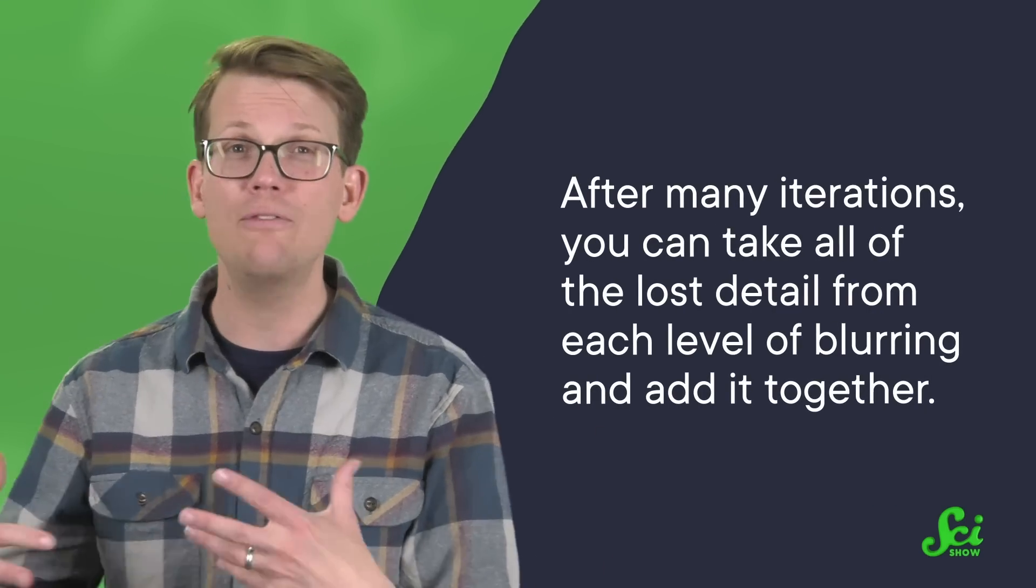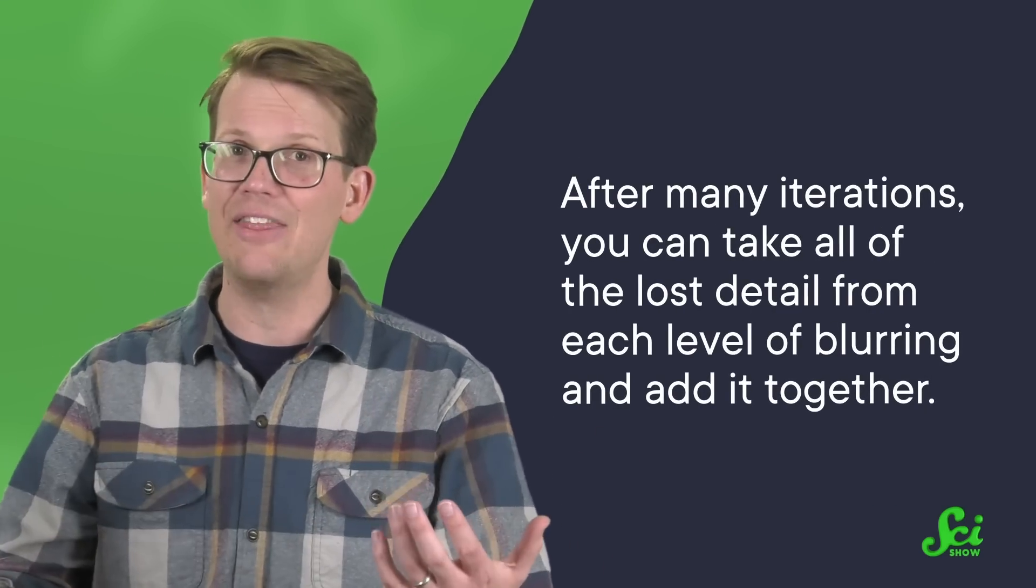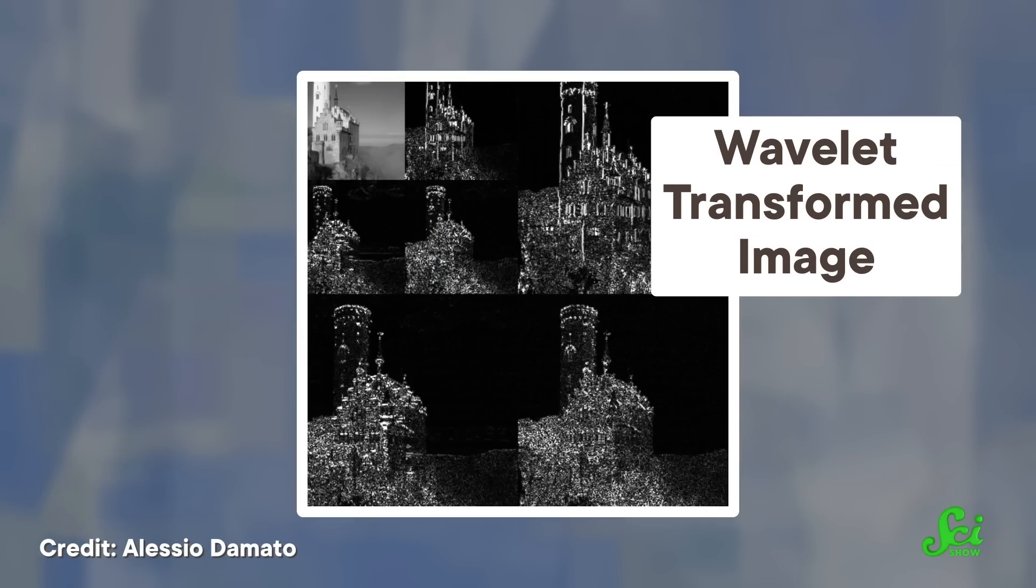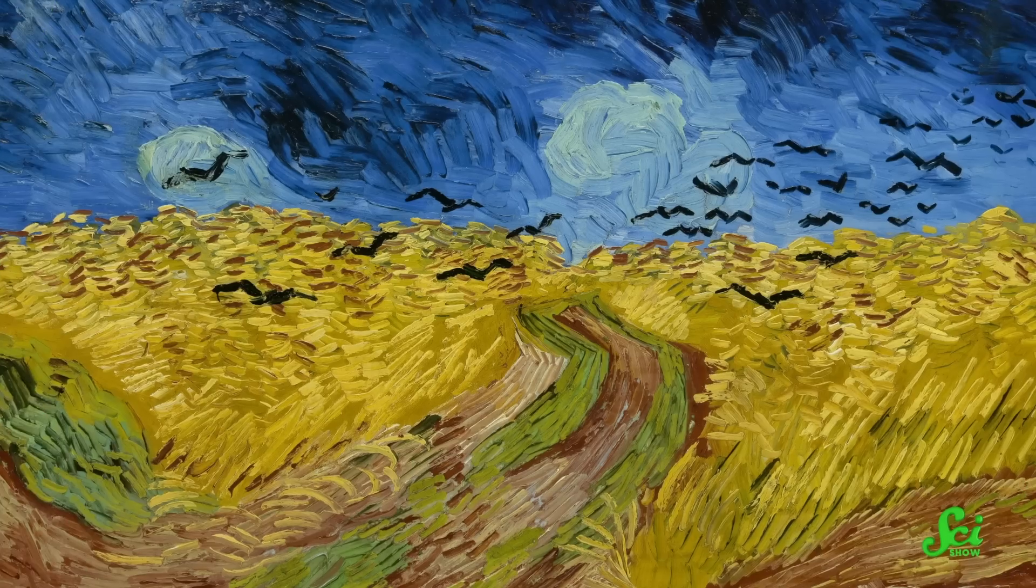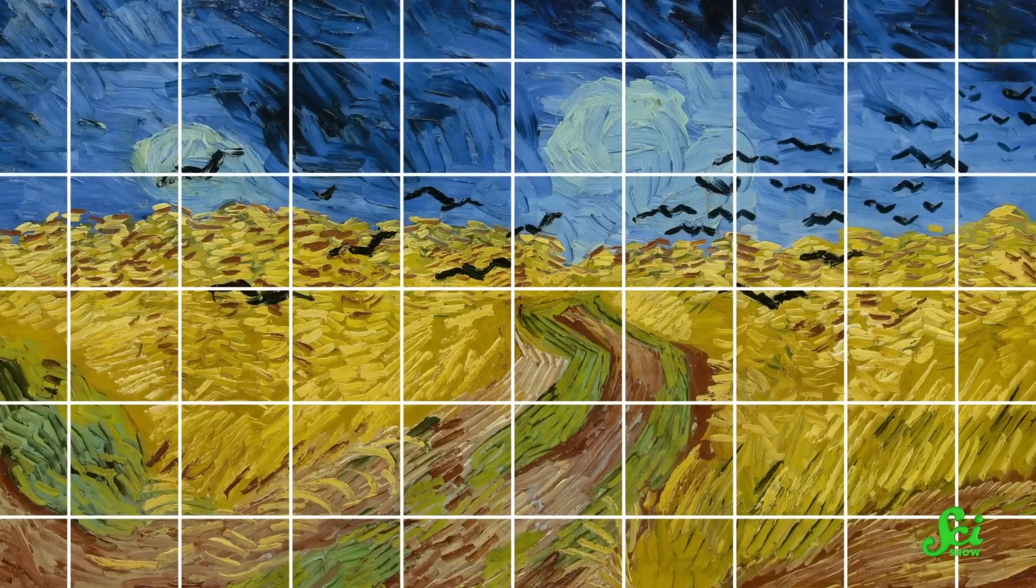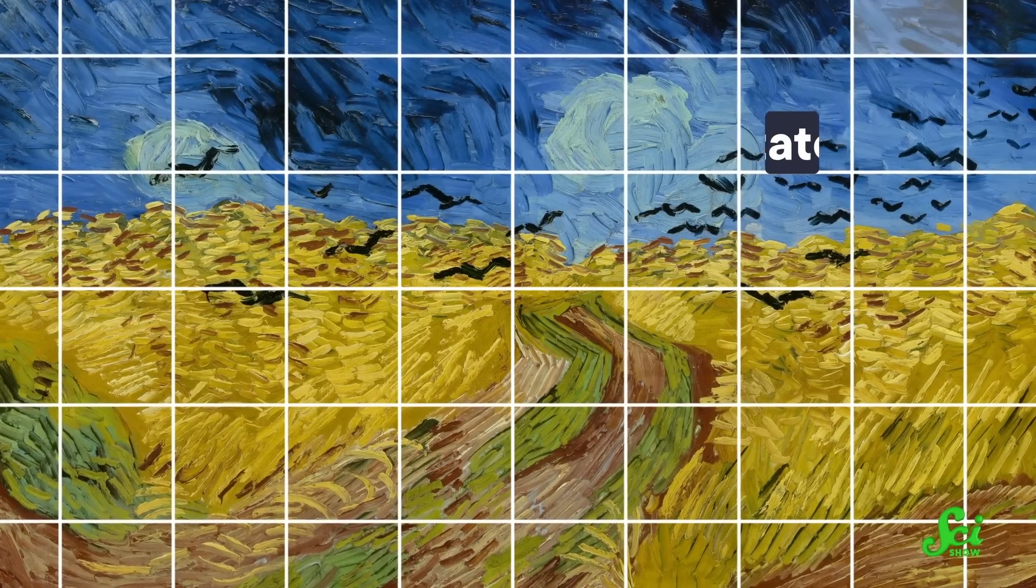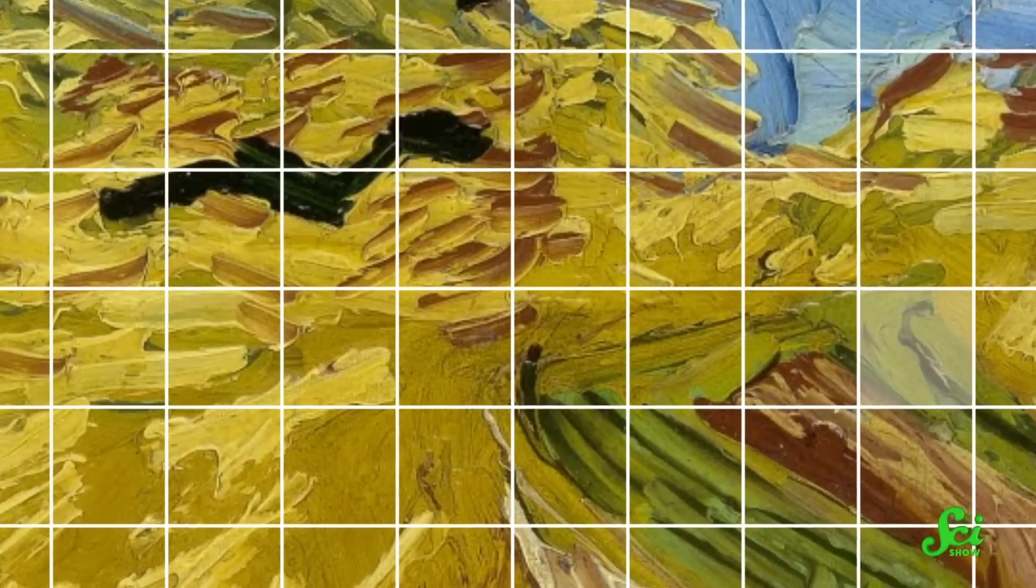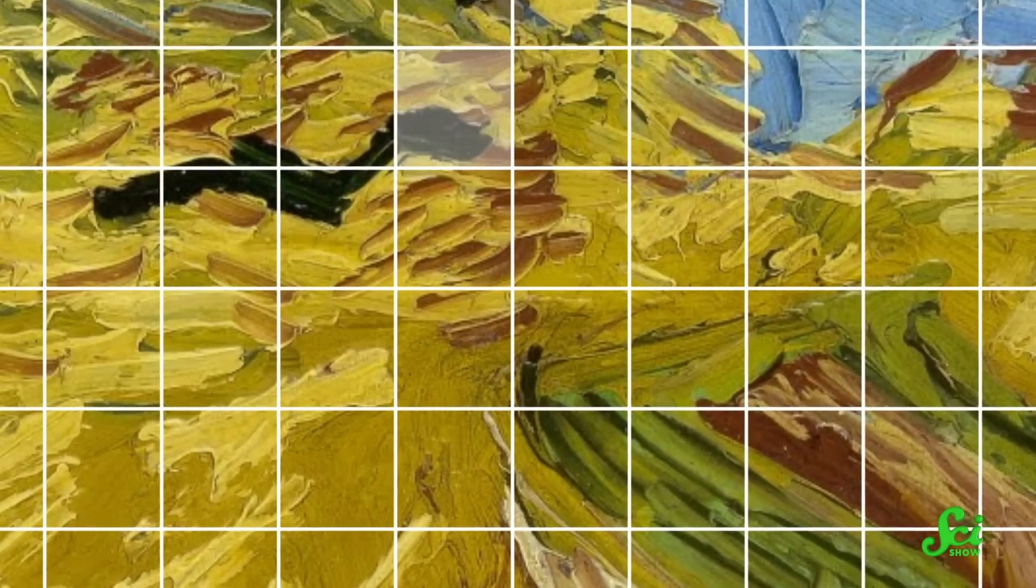And after many iterations, you can take all of the lost detail from each level of blurring and add it together. What you end up with is a summary of the original image that just contains its key features. They have a name for this. It's called a wavelet decomposition. Once a painting has been summarized in this way, mathematicians can use a number of different statistical tools to see how it compares to another painting. One approach is to use what's called a Markov model, which is a way to summarize patterns mathematically. Essentially, this model breaks down a pattern into a grid of little pieces called states, and then it looks at the probability that one state will be neighboring another. It can do this for textural patterns, too. So it's a way to represent the patterns of Van Gogh's brushstrokes with math. By comparing the Markov models of different paintings, you can tell how similar the textures are. And hopefully, that gives you an idea if you're looking at art by the same artist or two different ones.